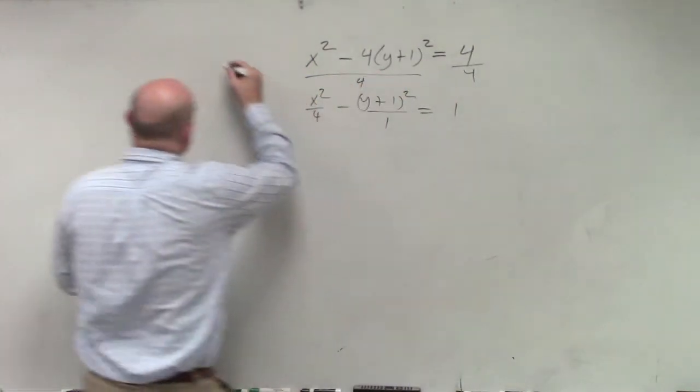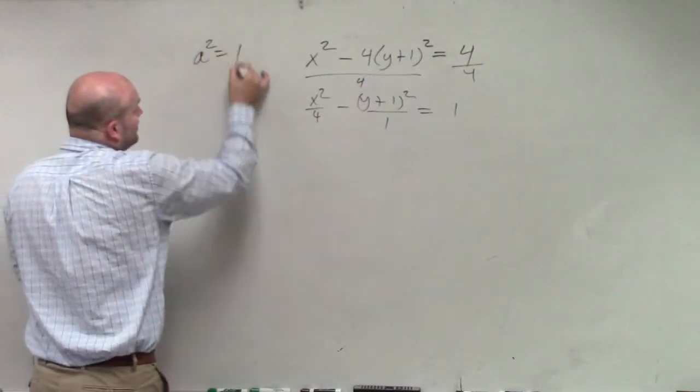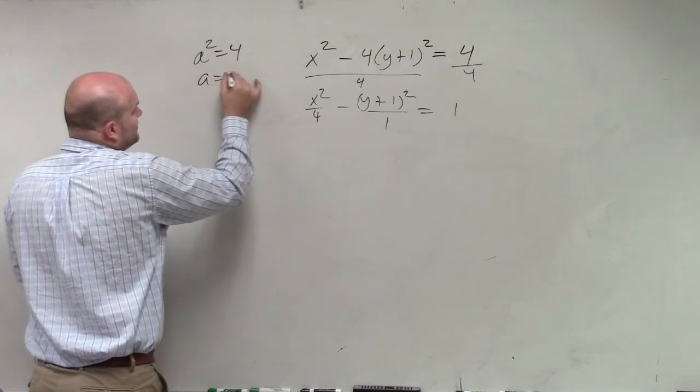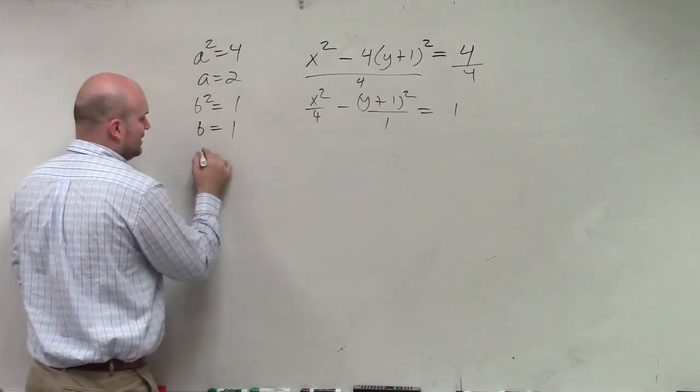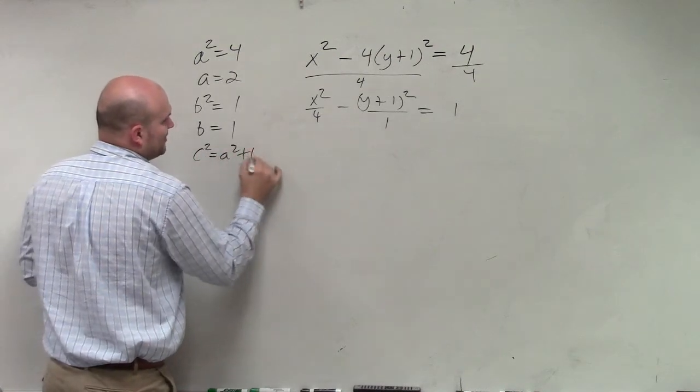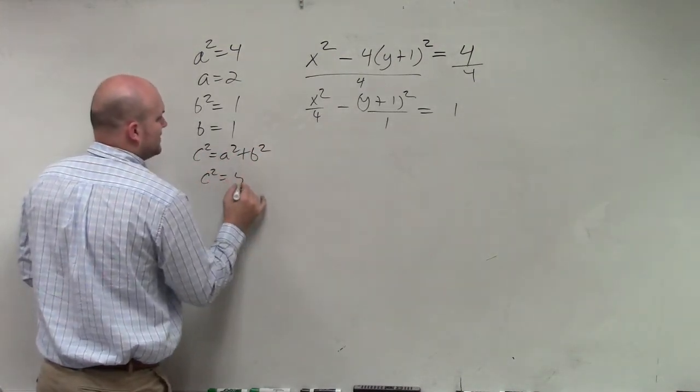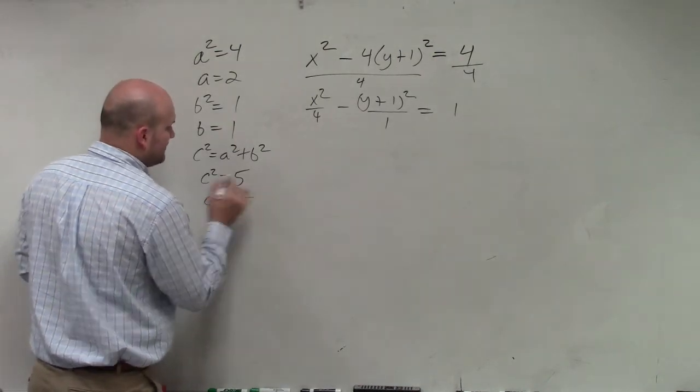So we know my a squared is going to be 4, therefore a equals 2. b squared equals 1, therefore b equals 1. And c squared is a squared plus b squared, which is 5. So therefore, c equals the square root of 5.